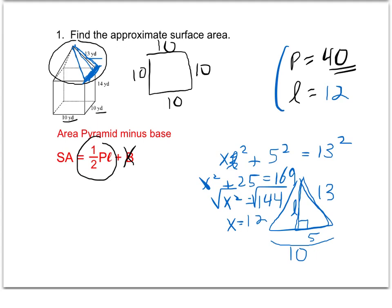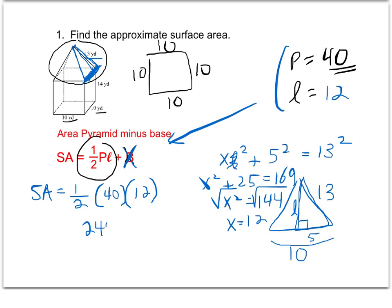Now that we have the values, we can plug them into our formula. The surface area of the pyramid — not including the base — is one-half times the perimeter of 40 times the slant height of 12. Calculating 0.5 times 40 times 12 gives 240. That's the surface area of the pyramid minus the base, so we'll keep that 240 in mind and now solve for the prism surface area.